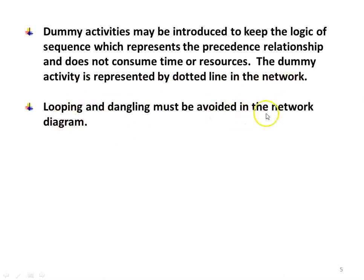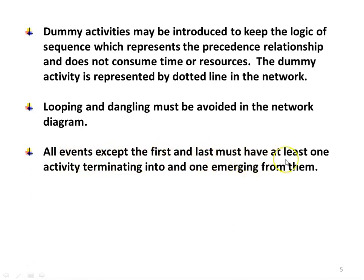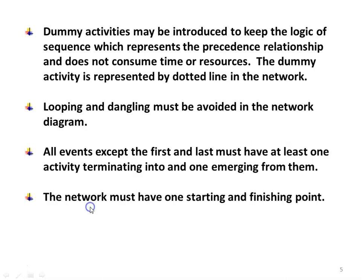Looping and dangling must be avoided in the network. Looping means starting and ending activities are connected by backward and forward arrows, which is not permitted. Dangling means an activity or event hanging freely — they should have a logical relationship between the previous and future activity. All events except the first and last must have at least one activity terminating into them and one emerging from them. The network must have one starting point and one finishing point.